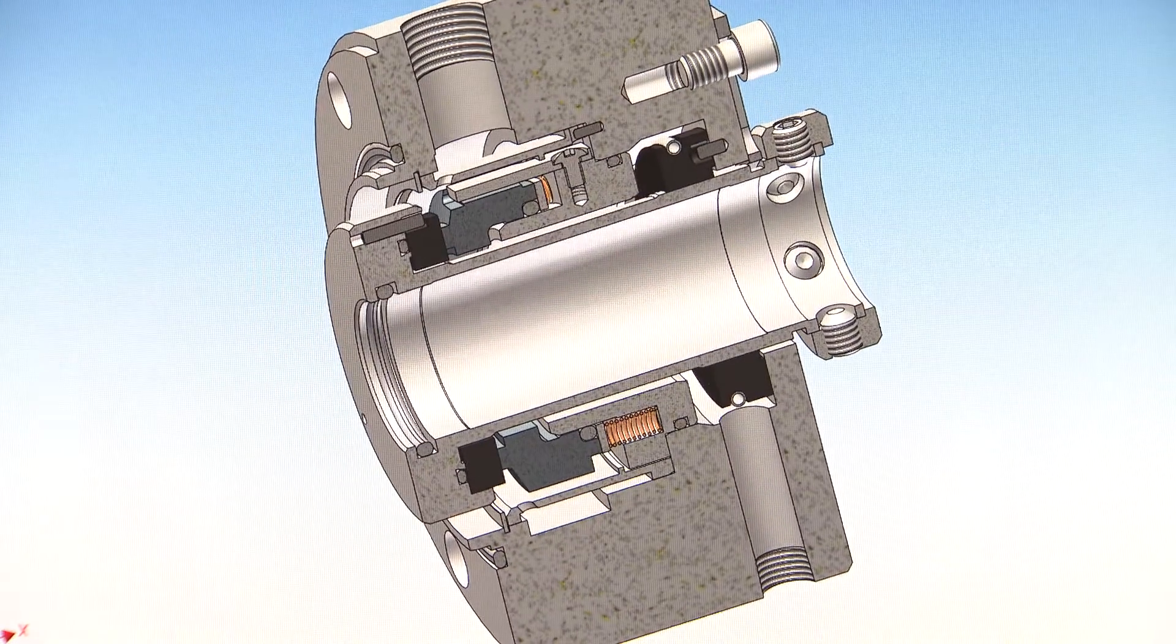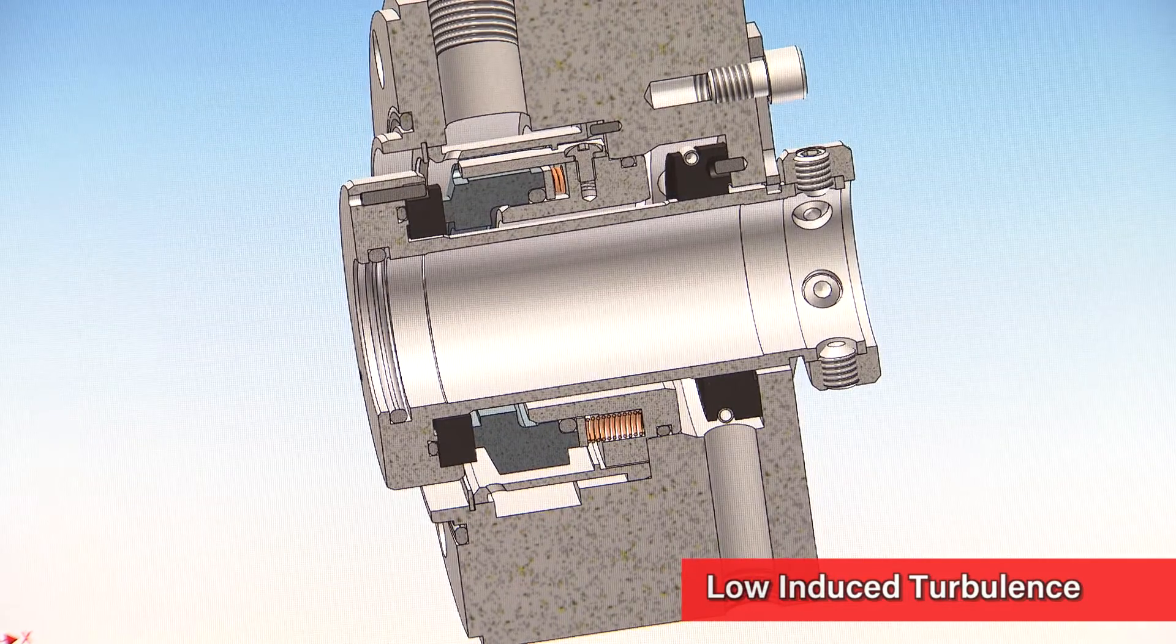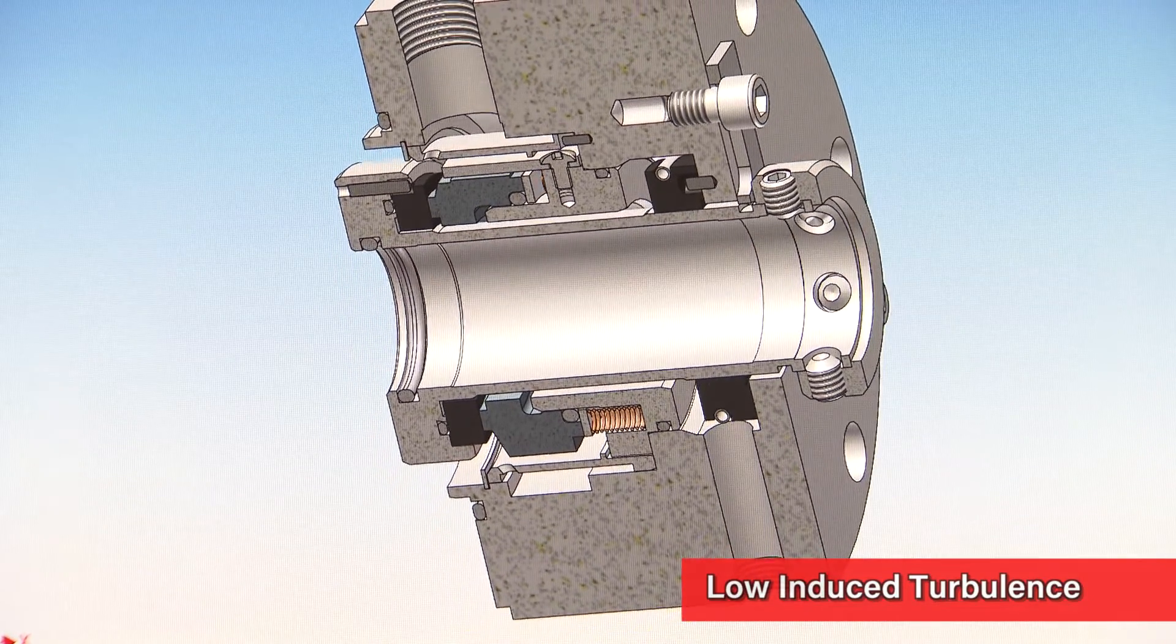A uniform, low-drag rotating element reduces turbulence in the seal chamber, particularly at high surface speeds.